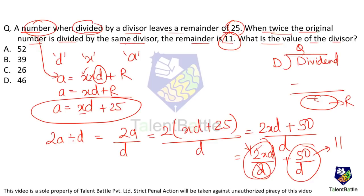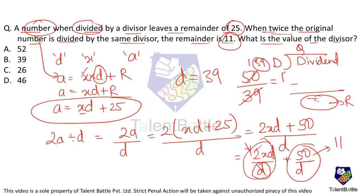So we need a divisor D such that 50 divided by D gives remainder 11. The only value that works is D = 39, because 39 × 1 = 39 and 50 − 39 = 11. So the divisor is 39, which is option B.